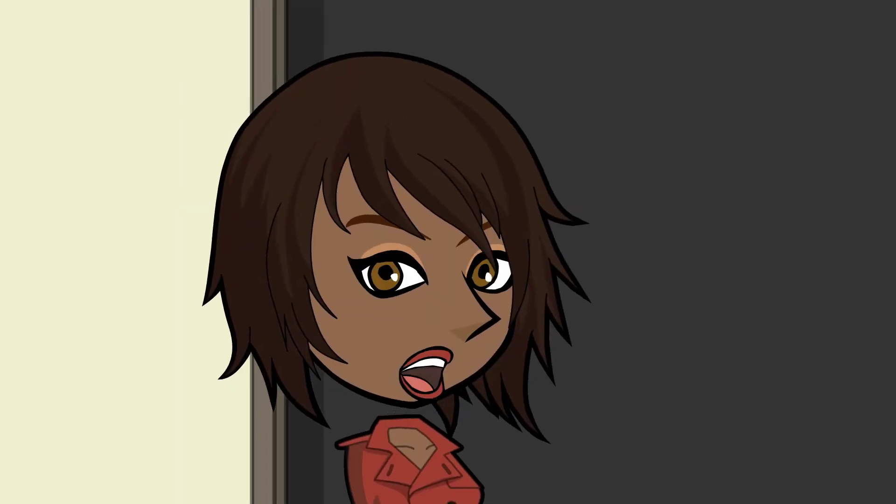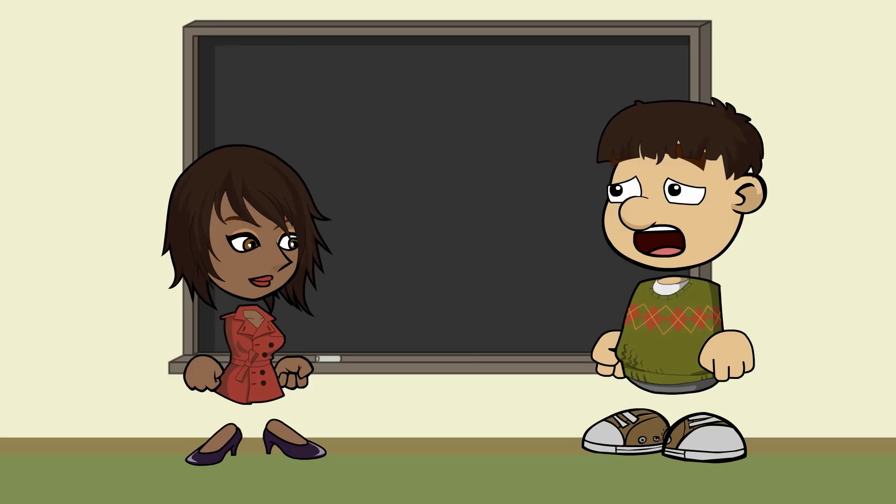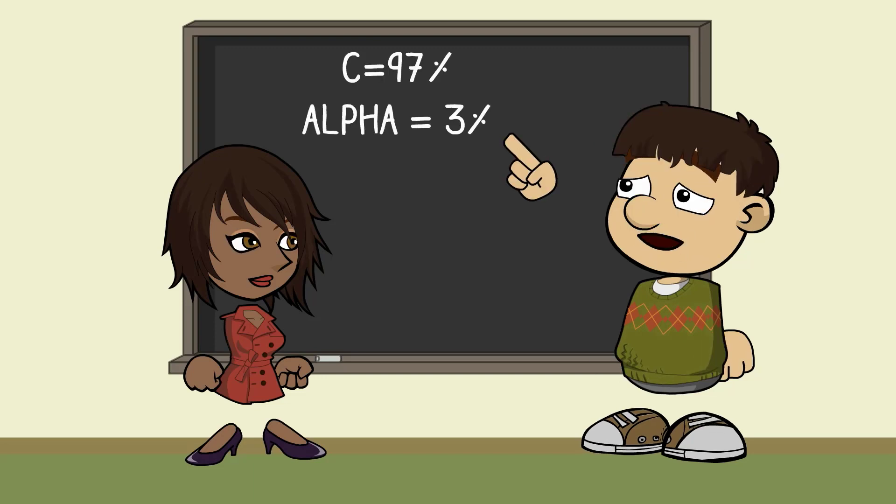So where would you set your significance level, alpha, for this experiment? Remember, alpha is 1 minus the level of confidence you need to feel comfortable in making the bet. Well, I really started to get comfortable with the idea of taking the bet after five heads in a row. So, I guess I would say my alpha is 3%, as that would give me a 97% confidence the coin is not fair.